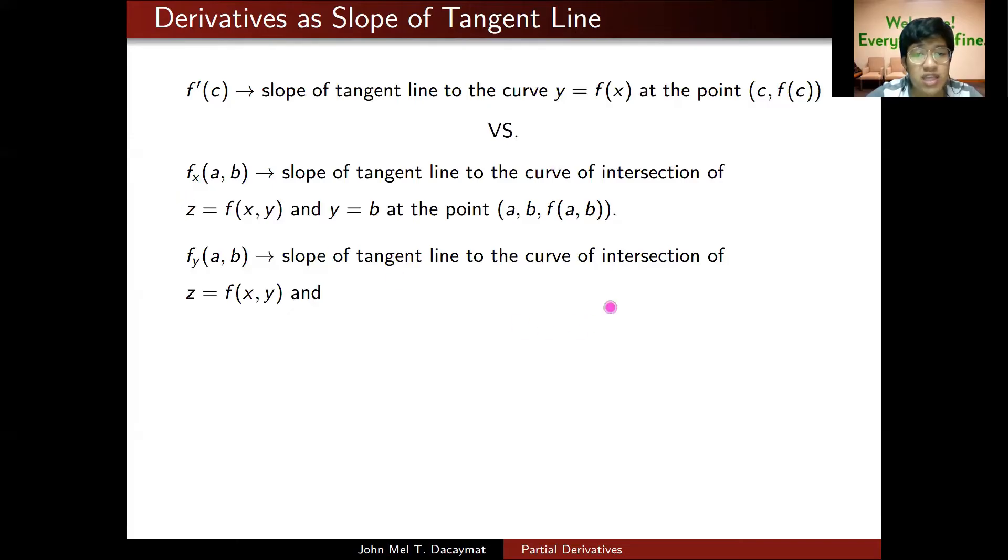For f sub y, it's similar, but the intersection of your surface with x equals a at the point (a, b, f(a, b)). So, when you have f sub x, the plane you fix is y equals b, but when you have f sub y, the plane you fix is x equals a. That's where you intersect the surface.